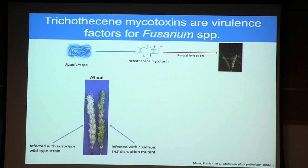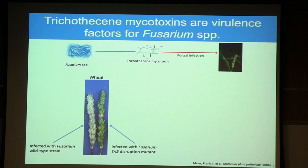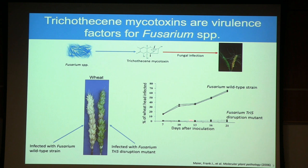This image shows a wild-type Fusarium strain that can produce trichothecine mycotoxins used to inoculate a wheat head — after about three weeks, the entire wheat head was infected. A mutant strain with tri-5 disrupted, unable to produce trichothecines, shows the infection did not spread from the initial inoculation point. The graph confirms this: solid lines are wild-type Fusarium, the dotted line is the mutant, showing the mutant cannot fully infect the wheat head.